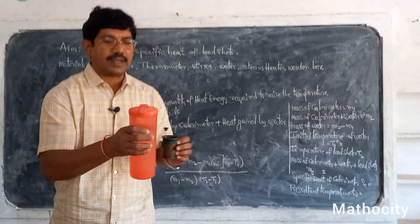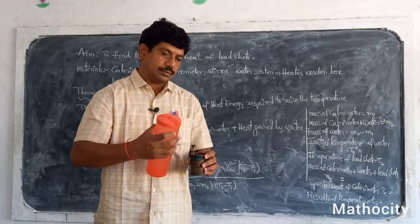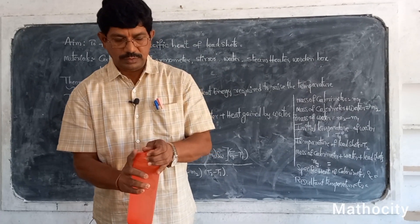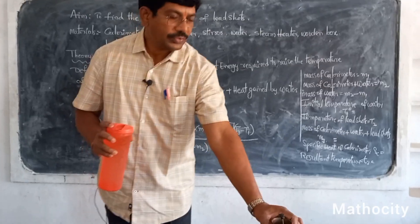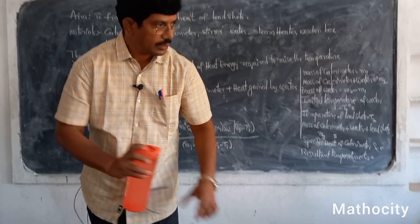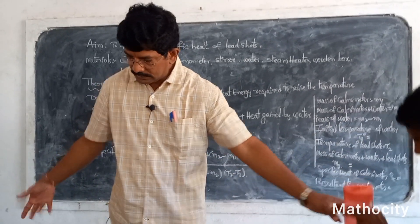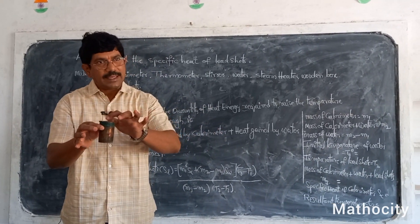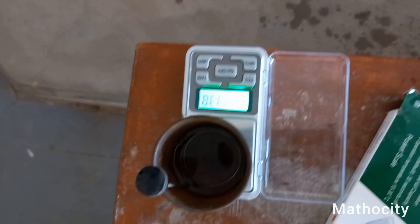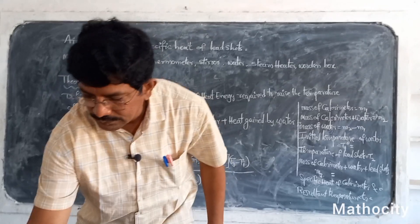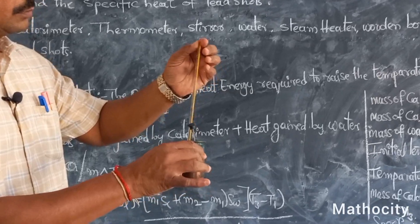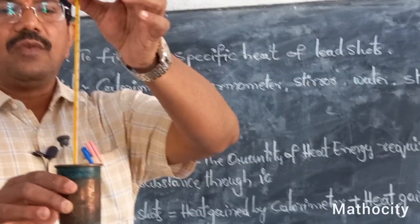I am taking one-third of the water in the calorimeter and keeping it aside. The mass of the calorimeter with the stirrer along with the water — M2 — is equal to 123.38 grams. Now find the initial temperature of the water.